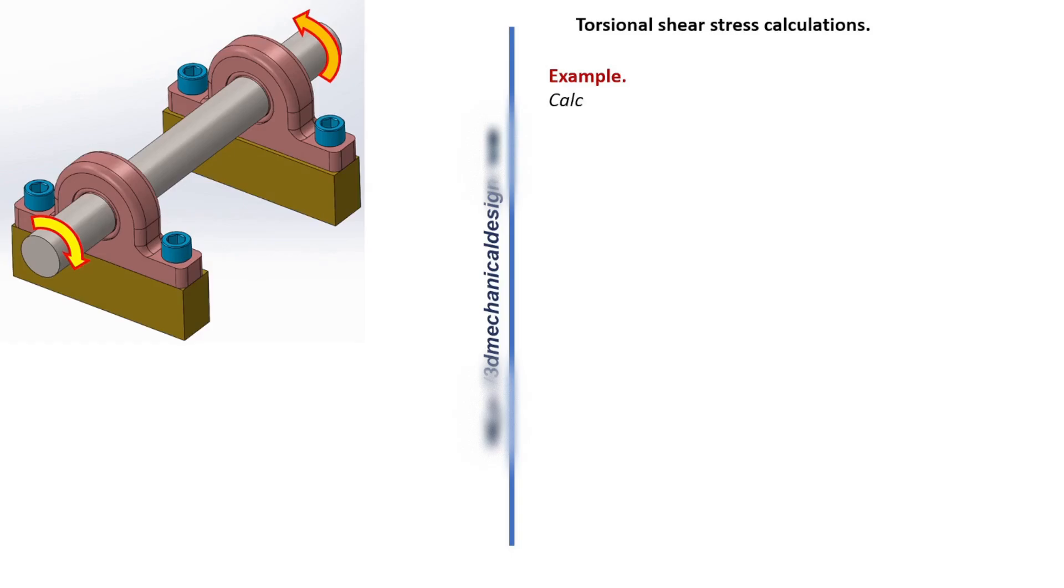Example. Calculate the maximum torsional shear stress on a 50 mm diameter shaft when a torque of 70 Nm is applied to it.